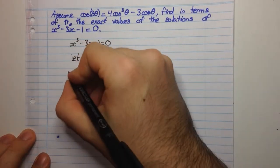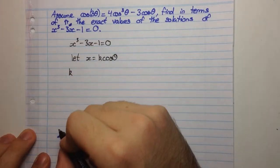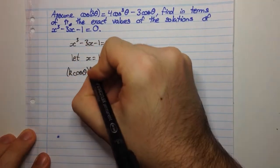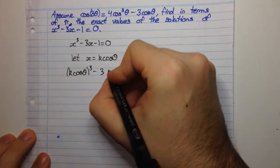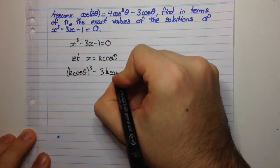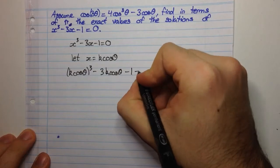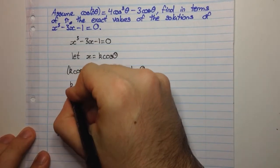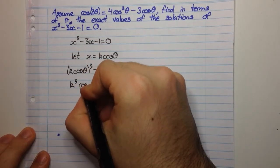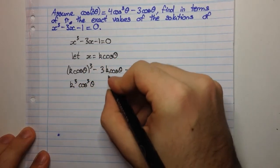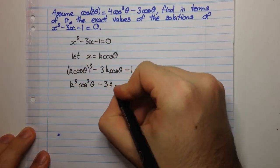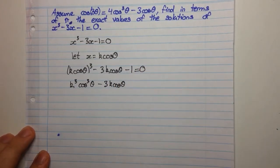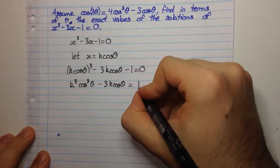So let x equal kcosθ. And so here we're going to have (kcosθ)³ minus 3 times kcosθ minus 1 equals 0. So we're going to get k³cos³θ minus 3kcosθ. And let's just bring this 1 to the other side. So this is equal to 1.